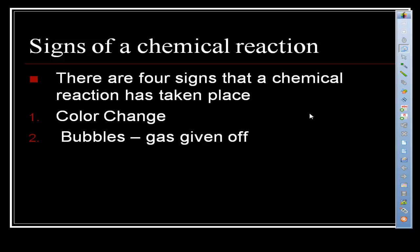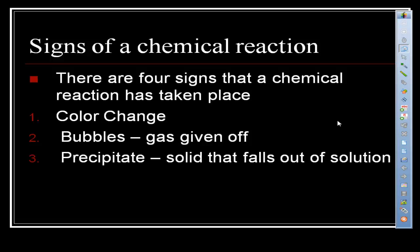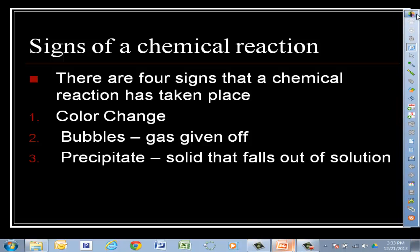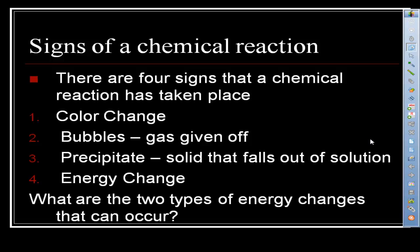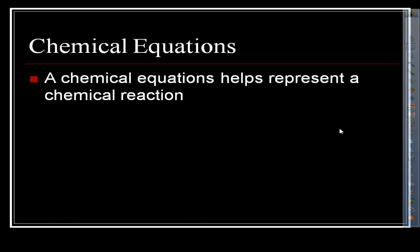Number two is bubbles or gas being given off. Number three is a precipitate — that's a solid that falls out of solution. If you take two liquids and combine them, you get a solid that forms, and that solid will never dissolve. Number four is an energy change: endothermic, where energy is put into the system, and exothermic, where energy is given off by the chemical reaction.